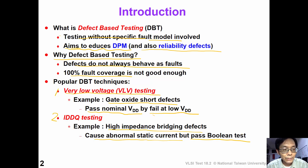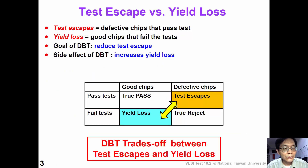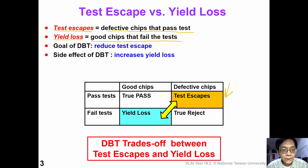These are two popular defect-based testing techniques. At the beginning of this course, we introduced the concept of test escape and yield loss. Test escape means those defective chips that pass the test, and yield loss means those good chips that fail the test. So, in this confusion matrix, we want to reduce the number of test escapes and at the same time, reduce the number of yield losses.